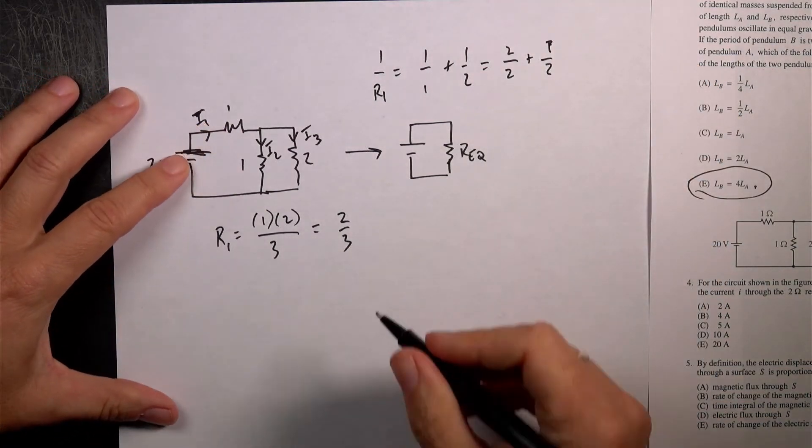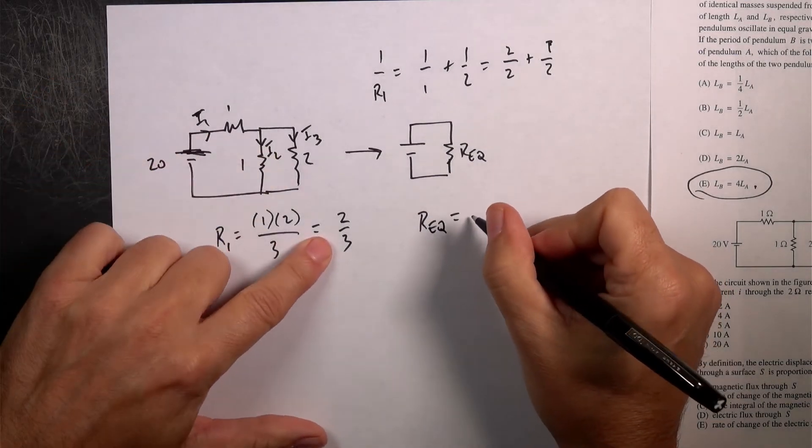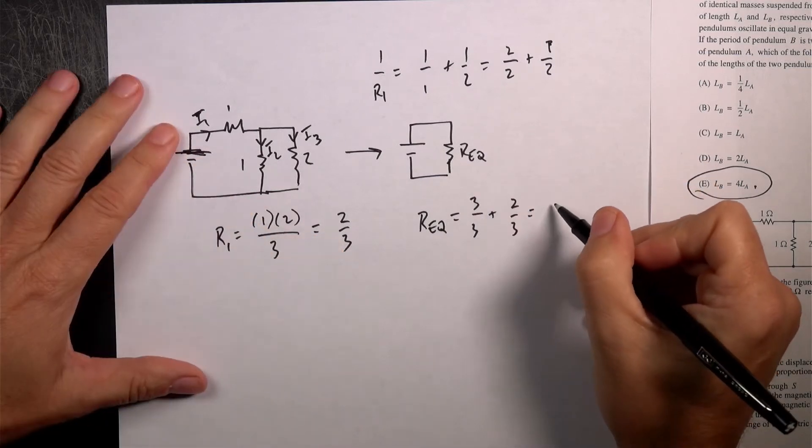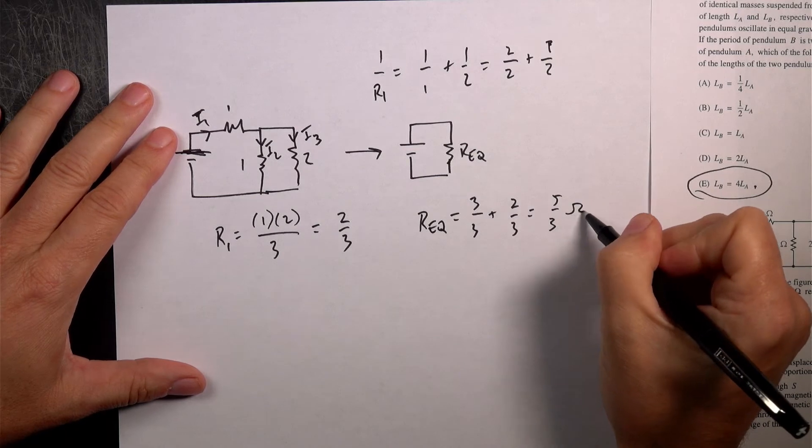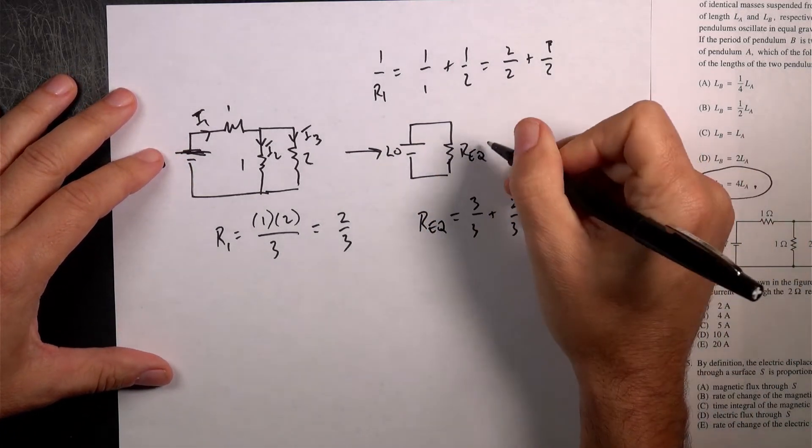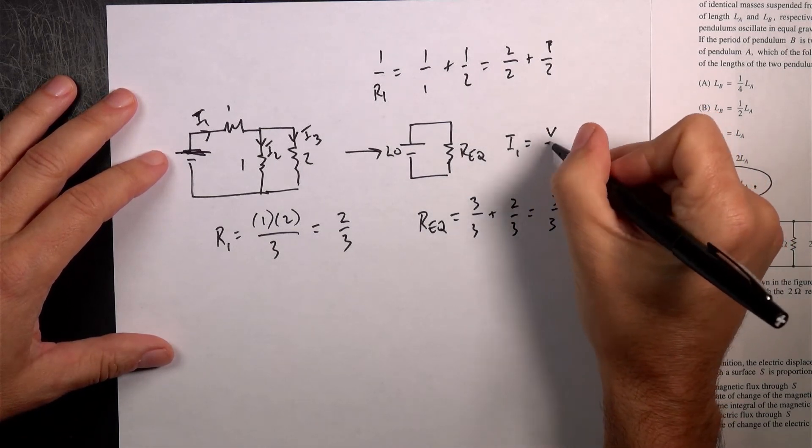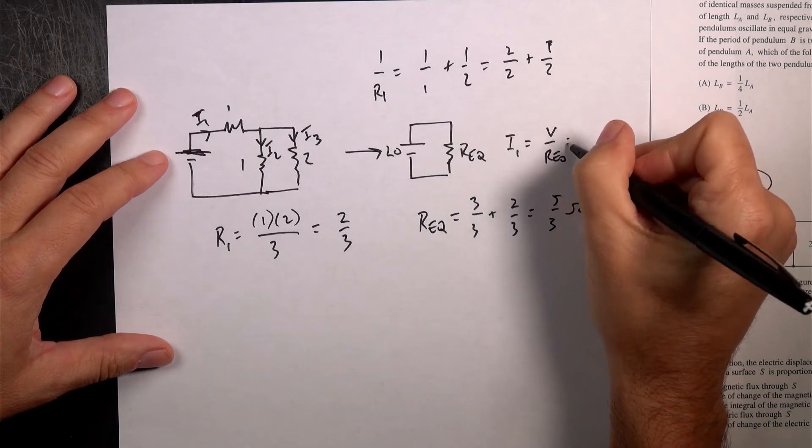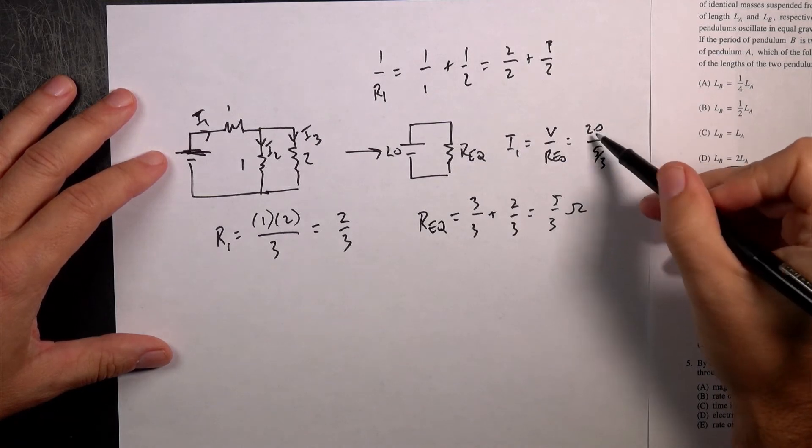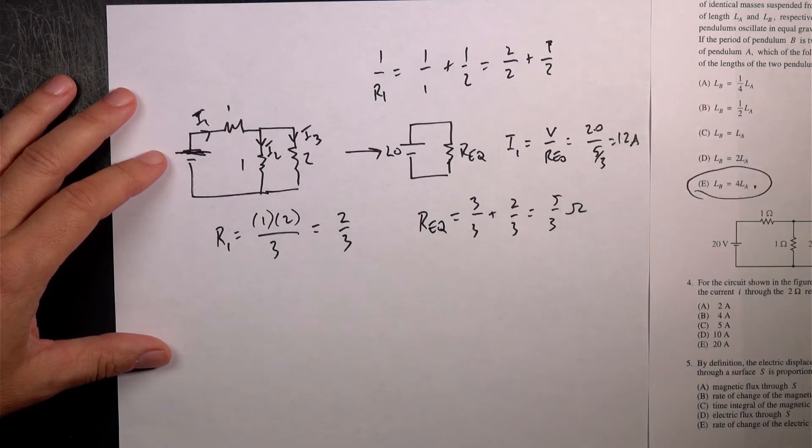Now I add this resistor right there. So the total equivalent resistance R equivalent is going to be equal to 3 over 3 plus 2 over 3. That's 1, and that's 5 third ohms. So now if I know that, if this is a 20 volt battery, that's a 5 third ohm resistor, I total, I1, is going to be equal to V over R equivalent. So that's 20 over 5 thirds. So this is going to be 20 divided by 5 is 4 times 3 is 12 amps. That's a huge thing. Let's just look over here.